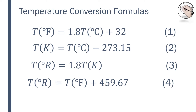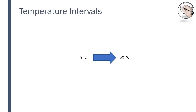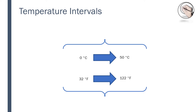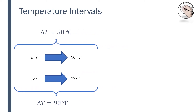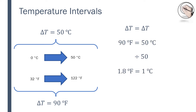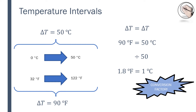I'd like to draw your attention to temperature intervals because you cannot use these conversion formulas to convert temperature intervals. If the temperature changes from 0 to 50 degrees centigrade, that is the same as temperature changing from 32 to 122 degrees Fahrenheit. The change in temperature using the centigrade scale is 50 degrees and 90 degrees using the Fahrenheit scale. These changes in temperature are the same, so they can be equated. If we divide throughout by 50, we get 1.8 degrees Fahrenheit is equal to 1 degree centigrade. This is the conversion factor you should use for temperature intervals. I'll leave it up to you to find the rest of the conversion factors for all the temperature scales.